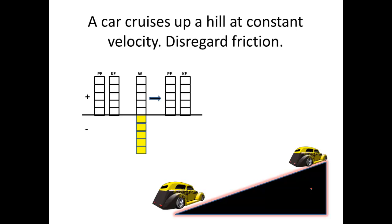In this example, a car cruises up a hill at constant velocity and we're going to disregard friction. The car is moving in the initial conditions with some velocity — let's call it two units. Because it's moving with constant velocity, I'm going to say on the other side I have the same amount of kinetic energy. Keep in mind, kinetic energy equals one-half mv squared, and because velocity doesn't change, neither does the kinetic energy.